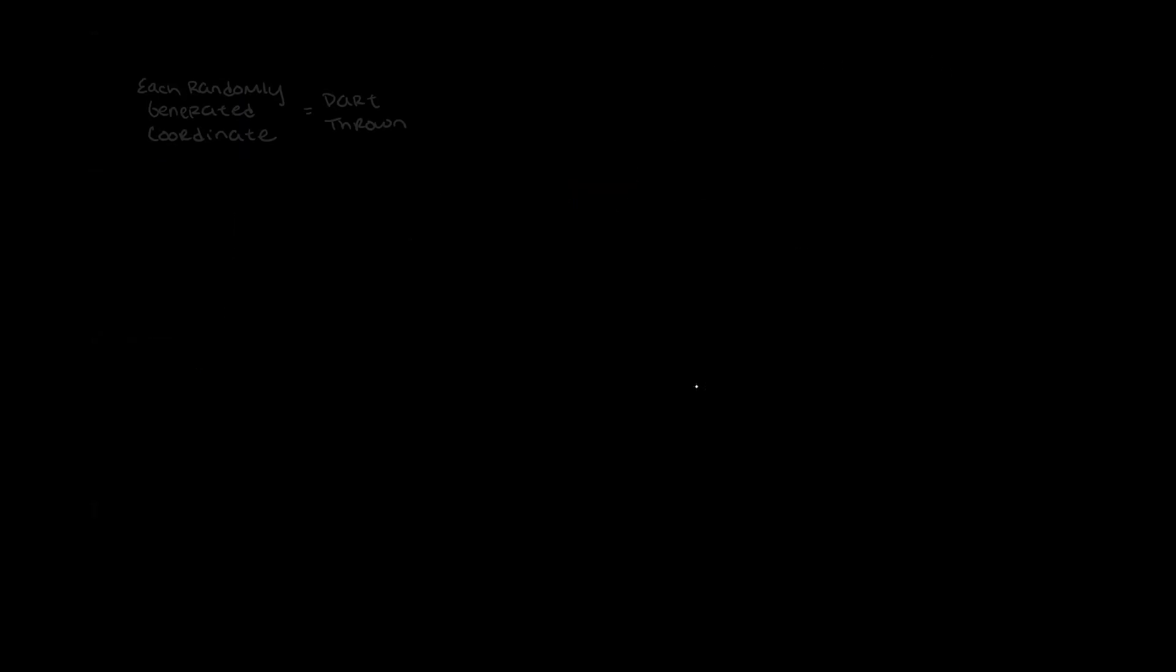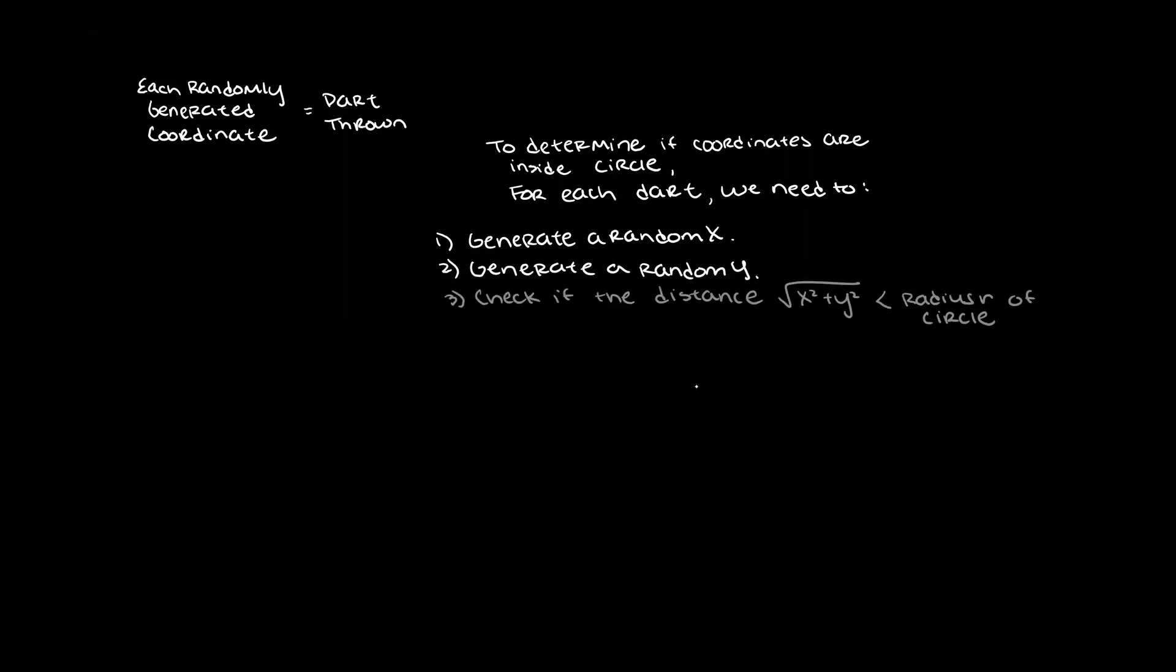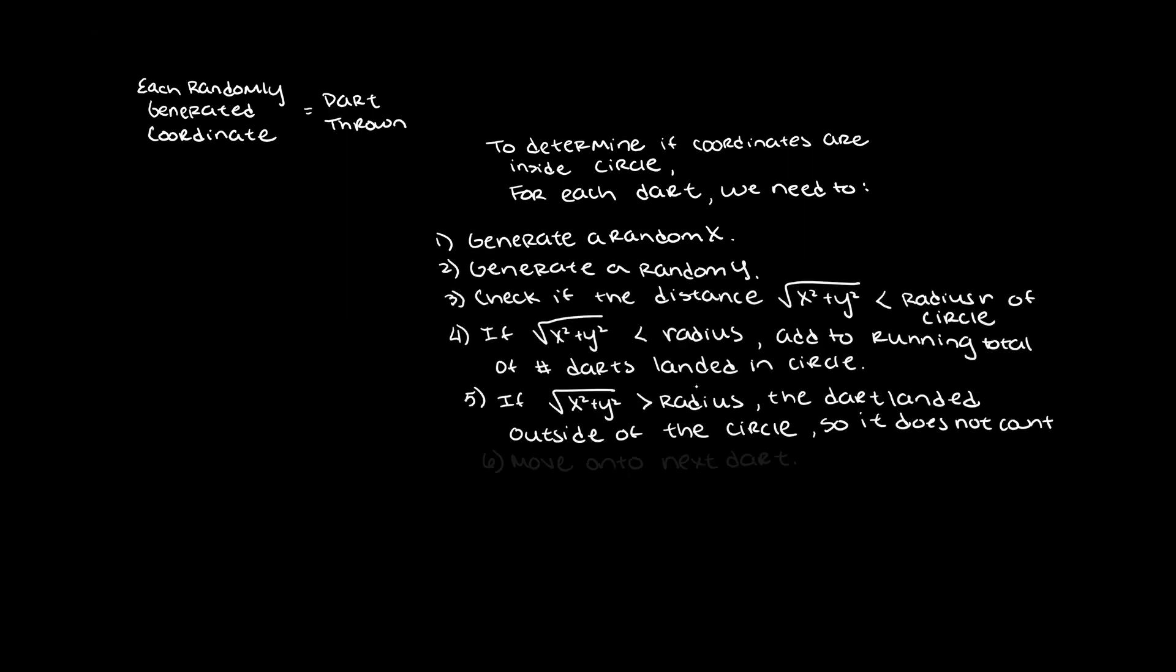Okay, so now we have some criteria to determine if the randomly generated coordinates, which represent darts thrown, fall inside of the circle. We need some way to keep track of the running total that meet the criteria. Remember, we are throwing a total of n darts, but not all of the darts will land inside of the circle. Let's very explicitly write out the steps of what we need to do in order to get the number of darts that land inside of the circle.